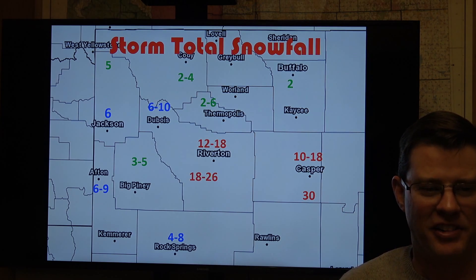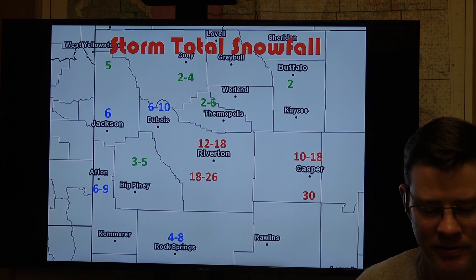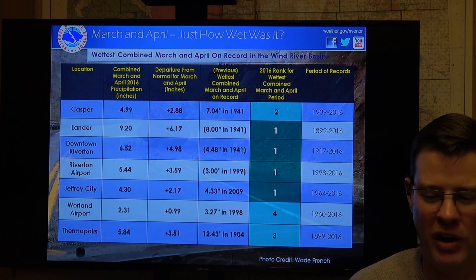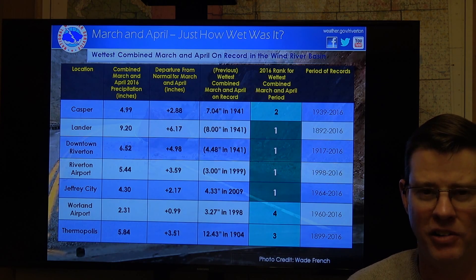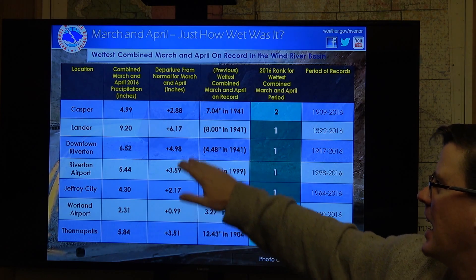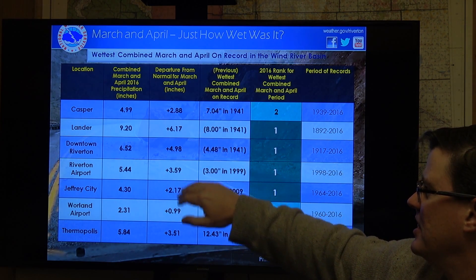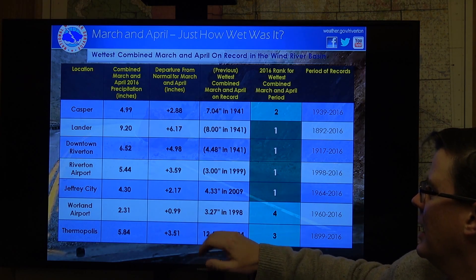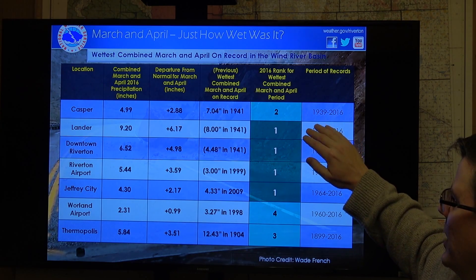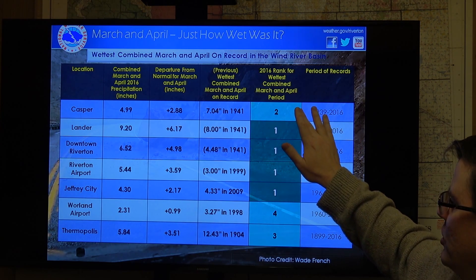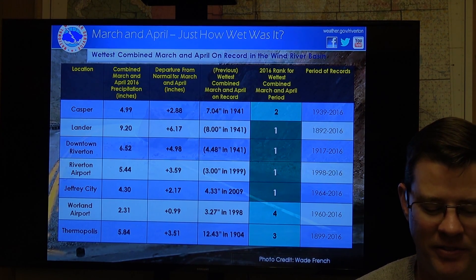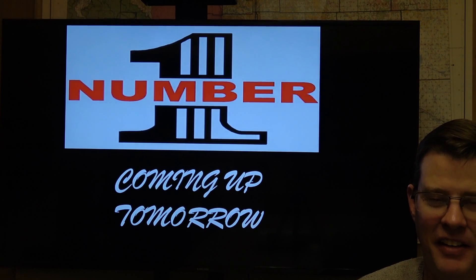This also leads into how wet it was, both March and April, because the winter was actually fairly dry. You can see the precipitation anomalies: at Casper, about 3 inches above normal; one location stood out at about 6 inches above normal; and about 5 inches in Riverton for March and April combined. Looking at the rank for the wettest months, you can see a lot of ones and twos. The wettest on record in Lander, Riverton, and Jeffery City — and number two in Casper. And this all leads into number one. Do you know what it is? Can you figure it out?